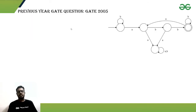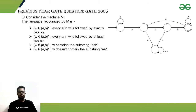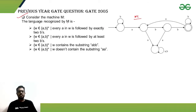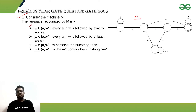Let's start with the GATE 2005 question. Consider the machine M — what is the language recognized by machine M? We need to check all the options. Option one says: every 'a' in w is followed by exactly two b's.